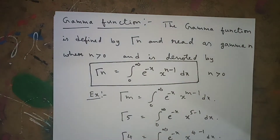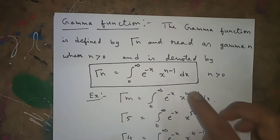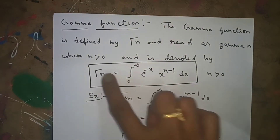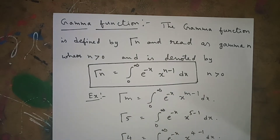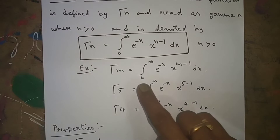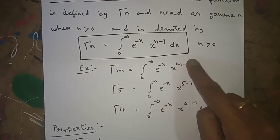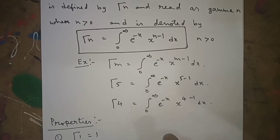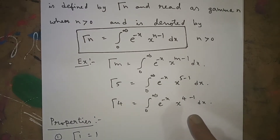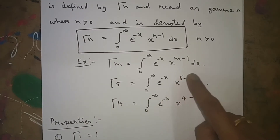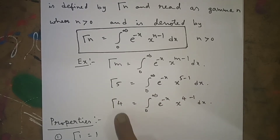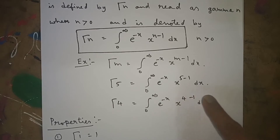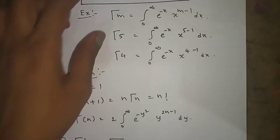For example, gamma(m) is written as: integral from 0 to infinity of e to the power of minus x into x to the power of m minus 1, dx. The difference is that n is replaced by m. Similarly, gamma(5) equals integral from 0 to infinity of e to the power of minus x into x to the power of 5 minus 1, dx. And gamma(4) equals integral from 0 to infinity of e to the power of minus x into x to the power of 4 minus 1, dx.